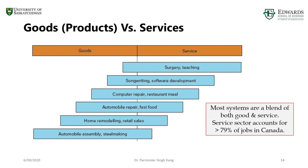Returning to the example of goods and services — the whole idea is that each firm includes some service and some tangible component. For automobile manufacturing, the dominant component is manufacturing goods, however there is a service component such as customer service and liaising with teams to develop new products. At the other extreme, a hospital or a teaching institution is dominated by the service component, though there are tangible elements — for instance, in teaching, physical materials distributed to students.